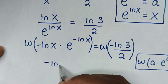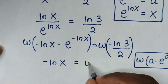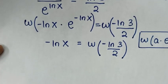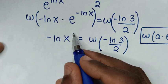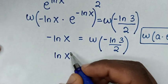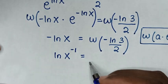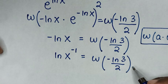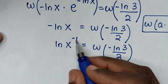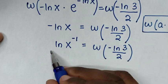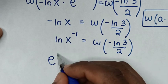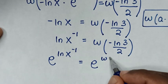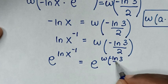Applying the Lambert W rule W(a·e^a) = a, for our equation it gives negative ln(x) is equal to W(negative ln(3)/2). In the next step, we note that negative ln(x) is the same as ln(x^(−1)), so x to the power of negative 1 is equal to e to the power of W(negative ln(3)/2).